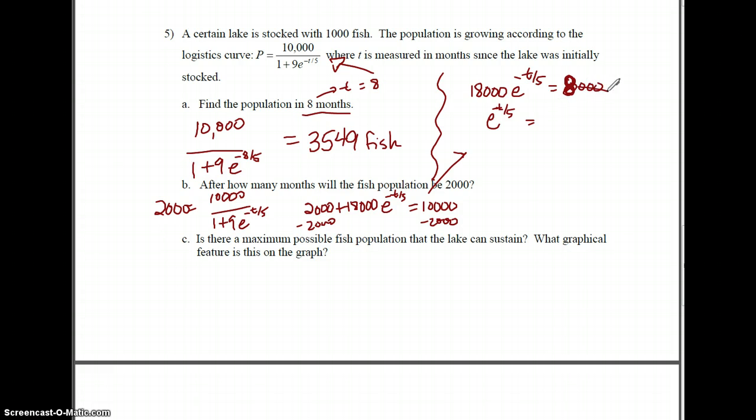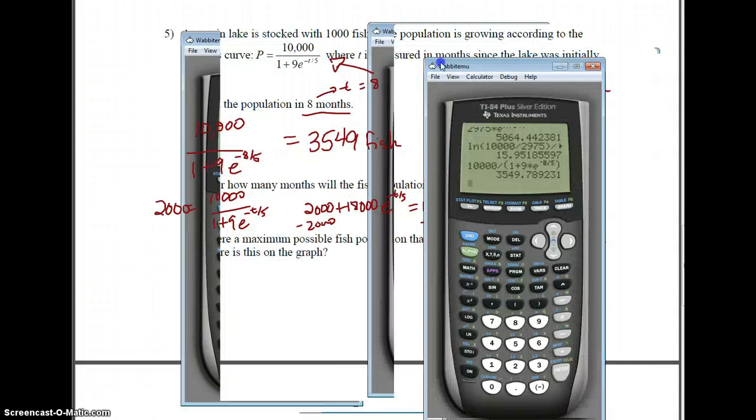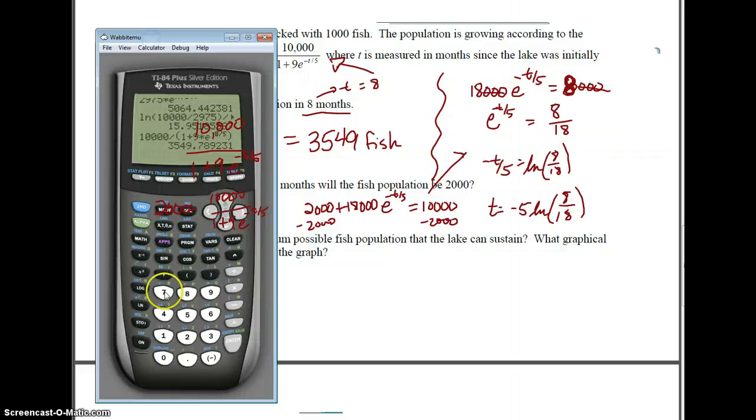So 18,000 e to the negative t over 5 equals 8,000. Divide by 18,000 on both sides. I'm actually going to get rid of these zeros, so I'm going to have 8 over 18. I'm going to take the ln, so I'm going to have negative t over 5 equals ln of 8 over 18. And I'm going to multiply by negative 5, so t is going to be negative 5 ln of 8 over 18. Let's calculate that out: negative 5 times ln of 8 over 18, 4.05. So 4.05 months.